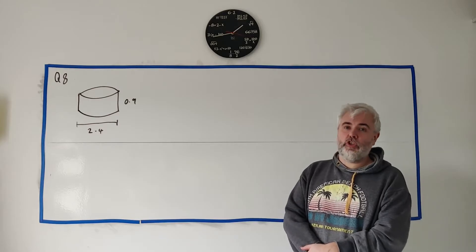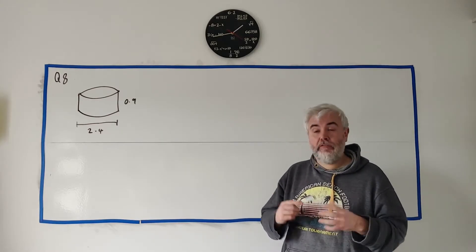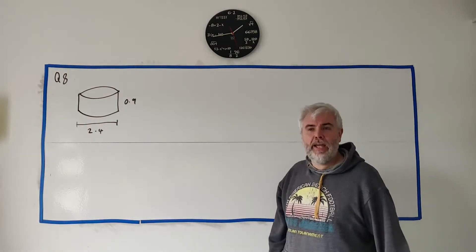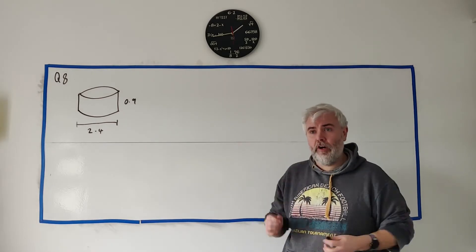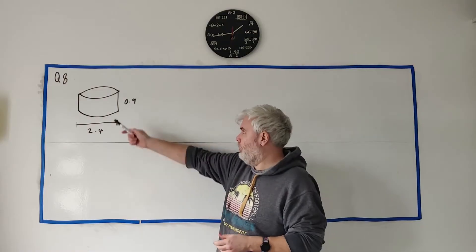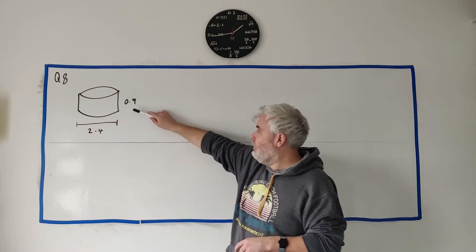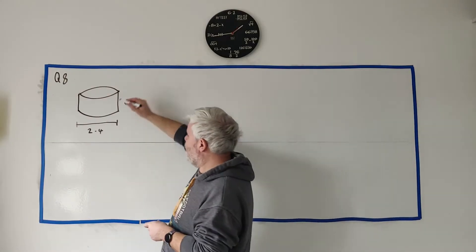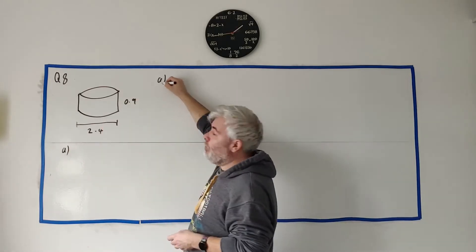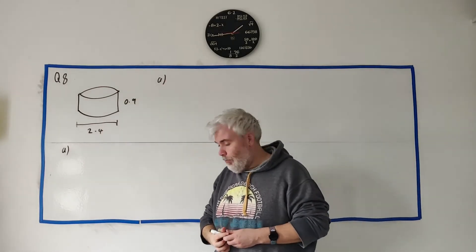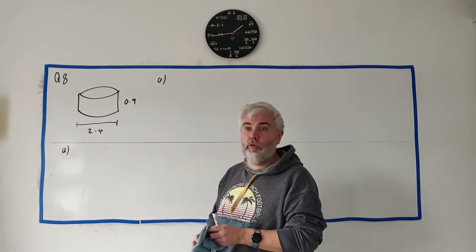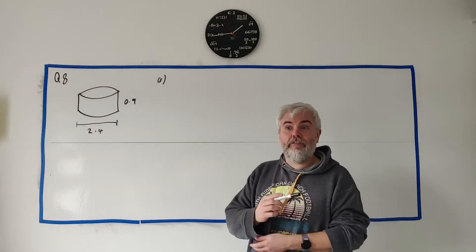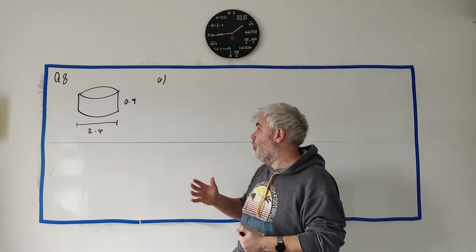This is question eight from paper two and this question mostly revolves around volumes and areas. They start us off by giving us a photograph of a swimming pool — a backyard swimming pool which I've tried to draw here. They tell us the height of it is 0.9 meters and the diameter is 2.4.